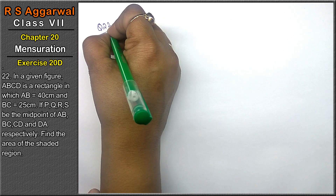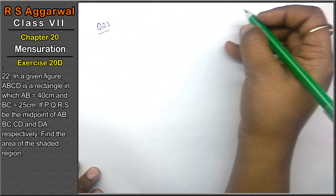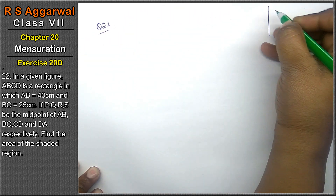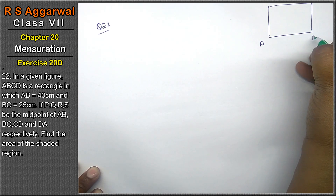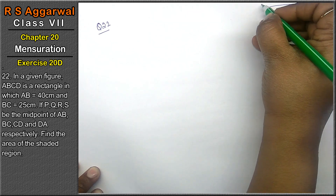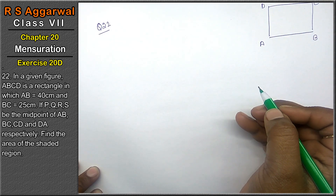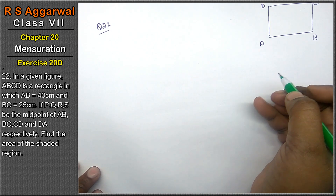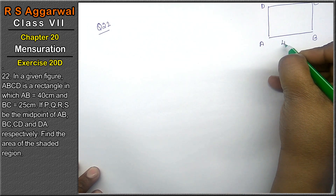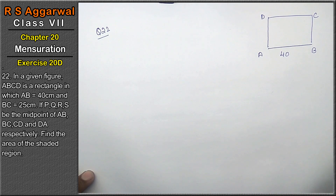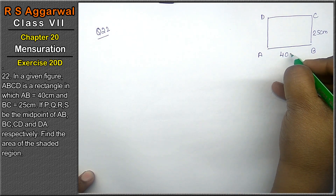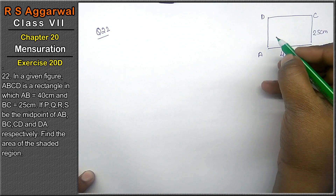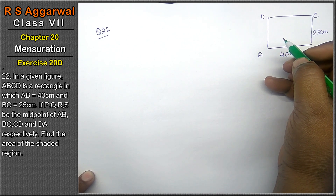Let's do question number 22 of exercise 20D, that is mensuration. In the given figure, ABCD is a rectangle where AB is 40 centimeters and BC is 25 centimeters. If P, Q, R, S are the midpoints of AB, BC, CD, and DA respectively, find the area of the shaded region.